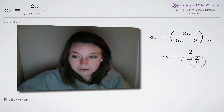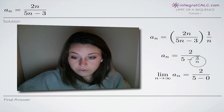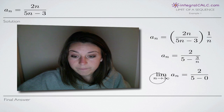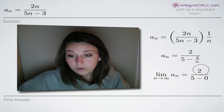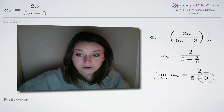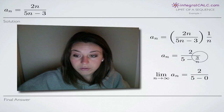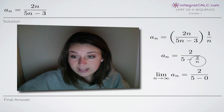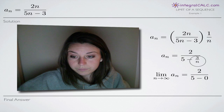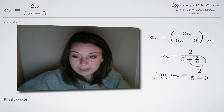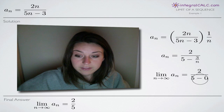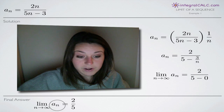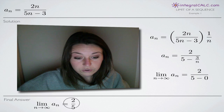Once we do that, we can plug in infinity and find the limit. The limit as n approaches infinity gives us 2 over the quantity 5 minus 0, because the term 3 over n, as n approaches infinity, becomes 0. So when we simplify, the 0 goes away and we see that the limit of our sequence is equal to 2/5.